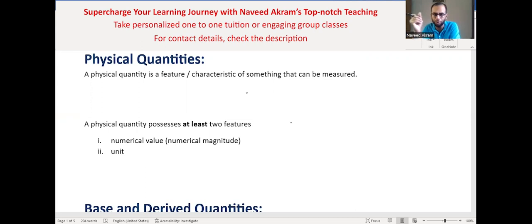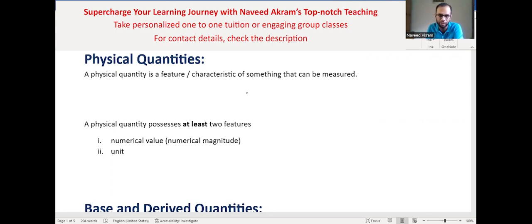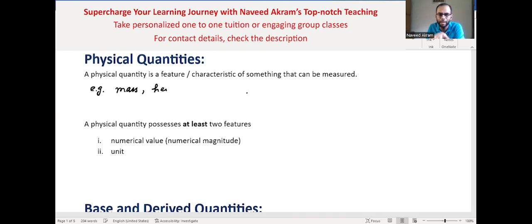Let's start with physical quantities. The first question is: what is a physical quantity? A physical quantity is a feature or characteristic of something that can be measured. For example, consider a baby — it has different characteristics and features which can be measured. For example, a baby has a mass, so mass is a physical quantity because it can be measured. The baby also has some height; again, height can be measured — it is a characteristic of the baby, and that is why it is a physical quantity.